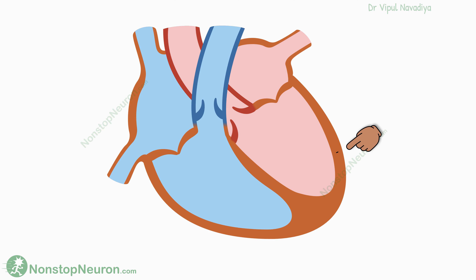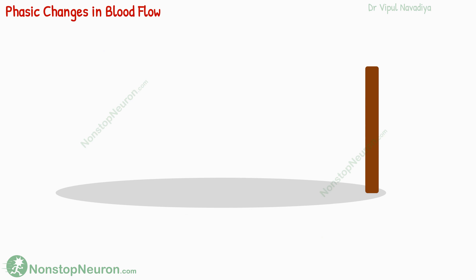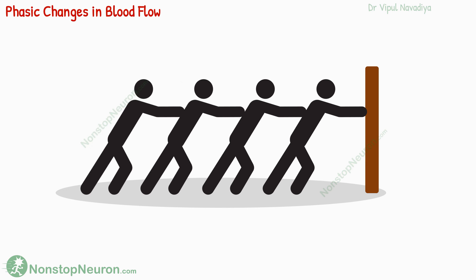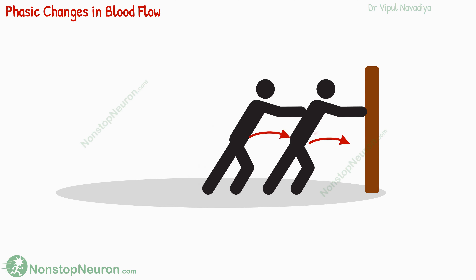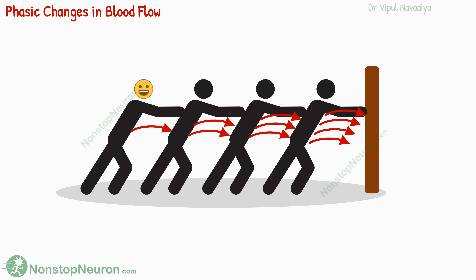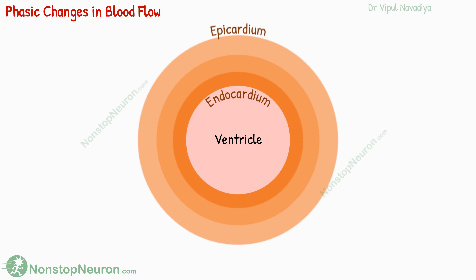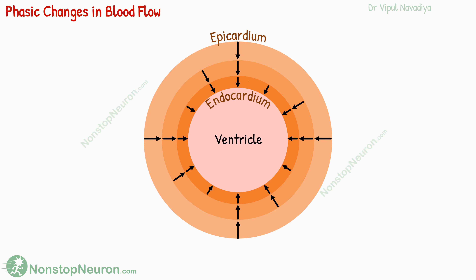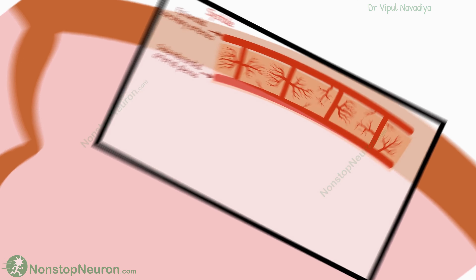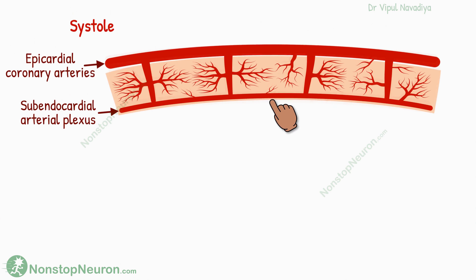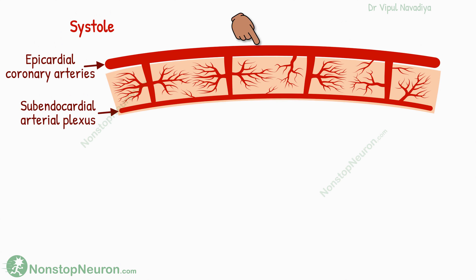Variation in blood flow occurs with depth of the wall too. Imagine a group of men standing in a queue in which each man is pushing the man next to him. The force of every previous man is added up for each person, so the outer person experiences less pressure and the inner person experiences more pressure. Similarly, we have many cardiomyocytes arranged along the thickness of the wall. So when the ventricles contract during systole, the force of each outer muscle mass is added up for the inner muscle mass. So the pressure is greater near the endocardium and least near the epicardium. This results in more compression of vessels in the endocardium than those near the surface, and therefore the blood flow near the endocardium tends to decrease during systole.